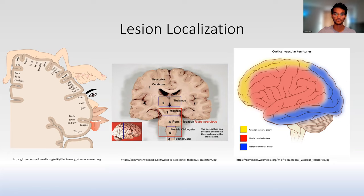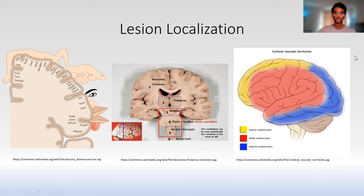Nerves typically cross over to reach your limbs. The vascular territories shown here: the anterior cerebral artery covers the front and middle region of the brain, the lateral aspect of the hemispheres is controlled by the middle cerebral, and the back and some middle structures are covered by the posterior cerebral arteries. These will be important for the high-yield syndromes we'll discuss next.